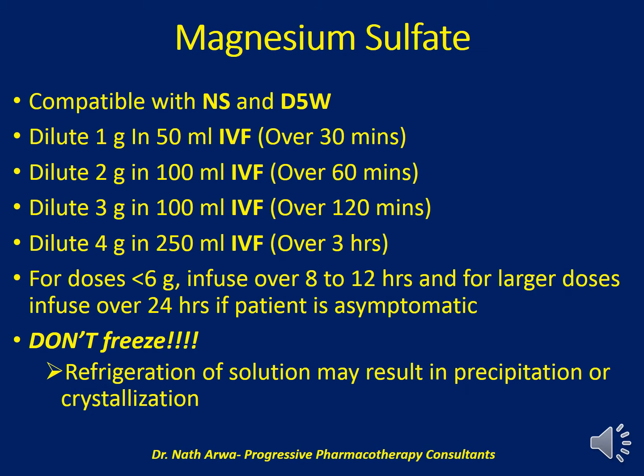For doses of up to 6 grams, infuse over 8 to 12 hours. For larger doses, infuse over 24 hours via continuous infusion if the patient is asymptomatic. Do not freeze the solution after dilution, because refrigeration may lead to precipitation or crystallization of the magnesium sulfate, which could occlude blood vessels during infusion.